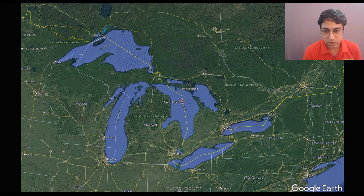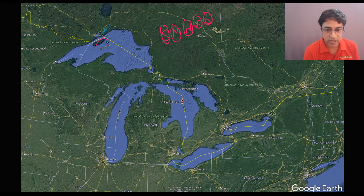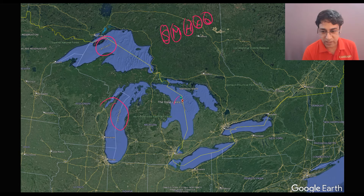You can use this formula S-M-H-E-O, or 'Society Must Honor Efficient Officers.' S for Superior, M for Michigan, H for Huron, E for Erie, and O for Ontario.